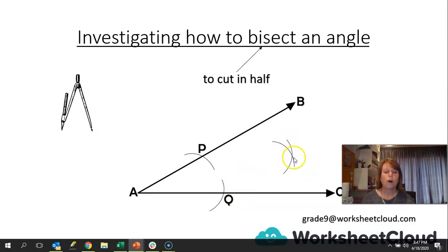Where those two arcs meet, that is the point we call R. We will then draw a line using our ruler from point A to meet point R where the two arcs cross, like that. Right, we now have bisected the angle BAC. So this angle here, BAC, we've cut it in half with line AR.